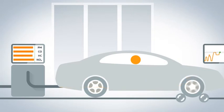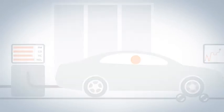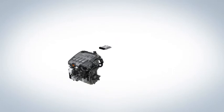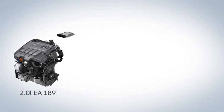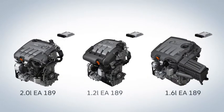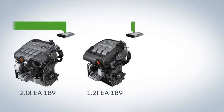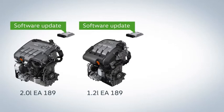The planned software update will no longer include this deactivation. We are currently developing technical measures to ensure that the affected vehicles meet the legal requirements. These differ for EA 189 engines in Europe depending on the engine type. The 2.0 and 1.2 liter engines get a software update; within this process the deactivating software is removed and new engine control software is installed. This will take about 30 minutes.